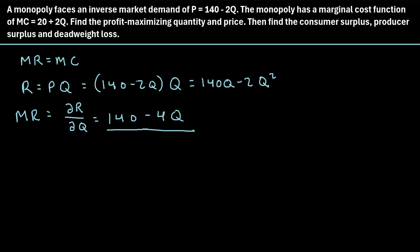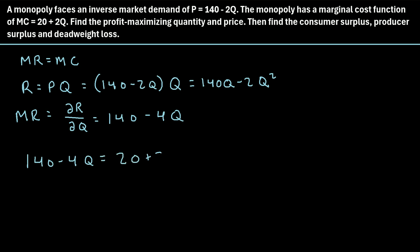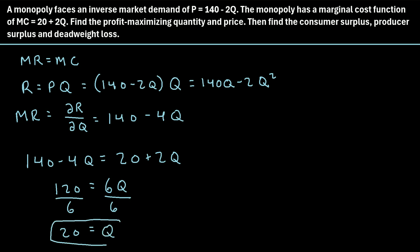Now we set marginal revenue equal to marginal cost and solve for Q. So: 140 minus 4Q = 20 plus 2Q. Adding 4Q to both sides and subtracting 20 from both sides gives 120 = 6Q. Dividing both sides by 6, we get Q = 20. So the monopoly maximizes profit when producing 20 units.